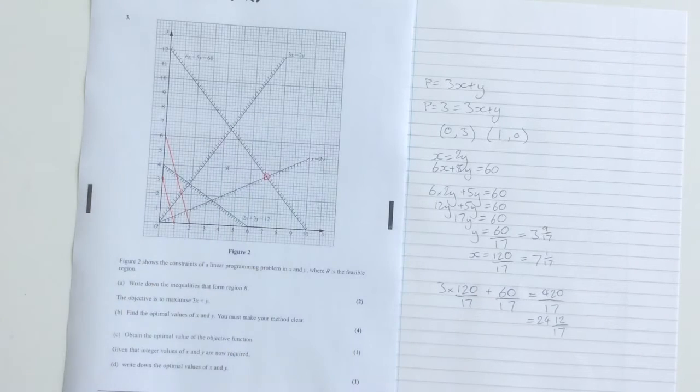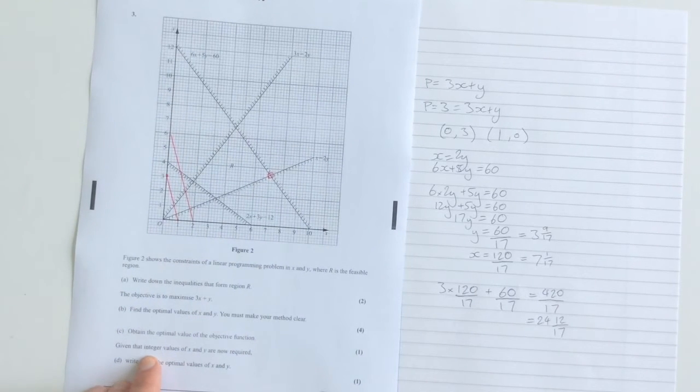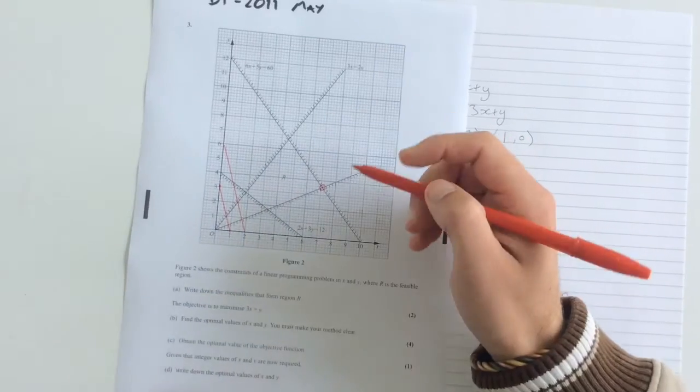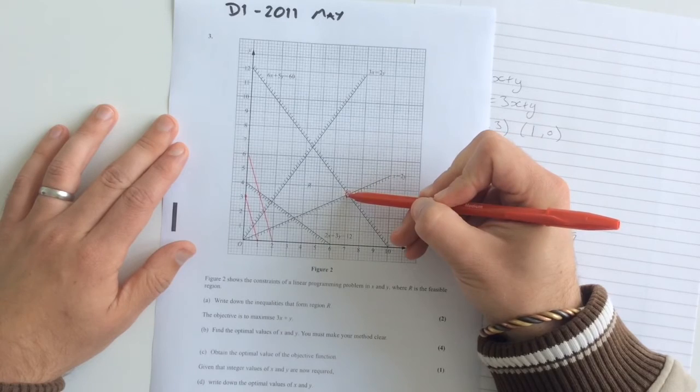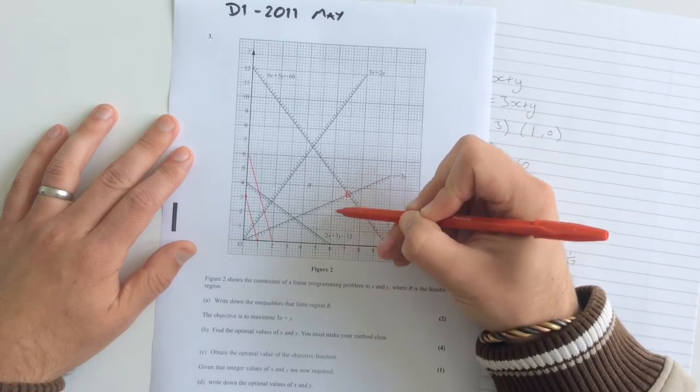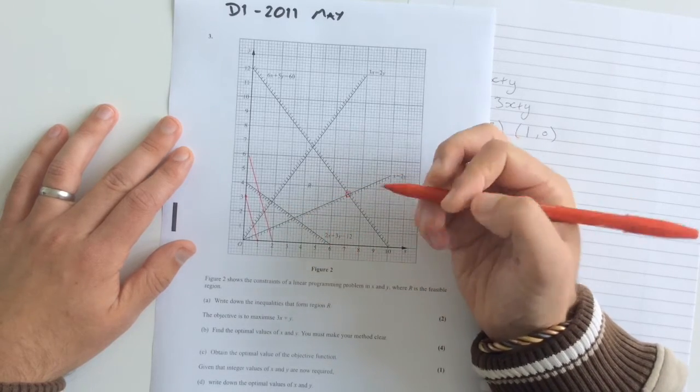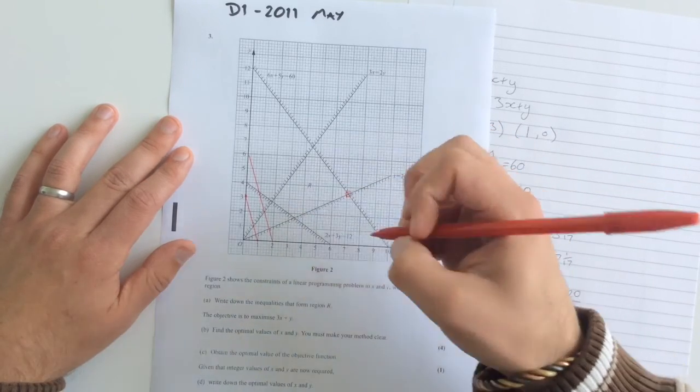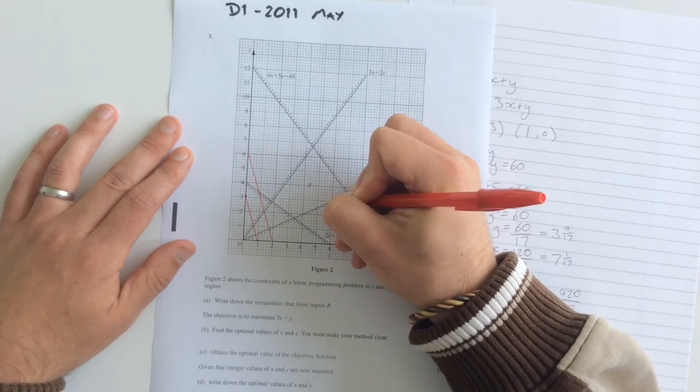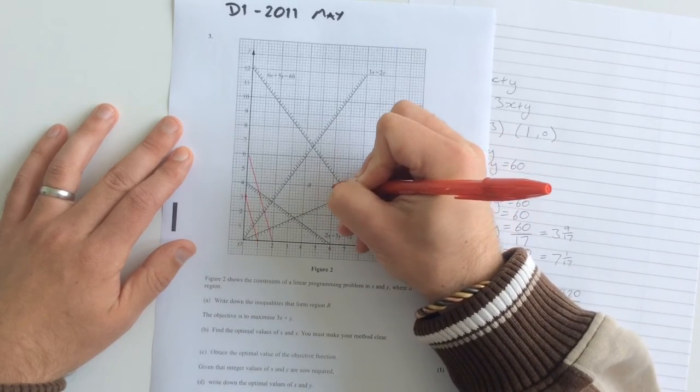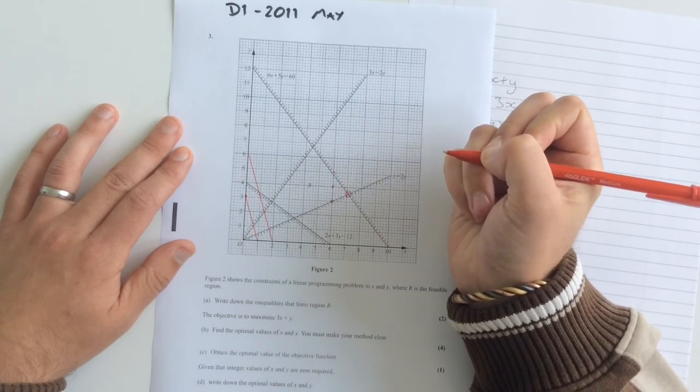And the last part of the question tells us that we've got to have integer values for x and y, and we need to write down the optimal values for x and y. Well, if we have a look at our graph, we've got our value there, which we know is non-integer values. But each of these thicker lines is representing a new integer on the x or y scale. So if we go through and look at what we've got, we've got an integer solution at that point. We've got one there. We've got one there, but that's actually not in the feasible region.